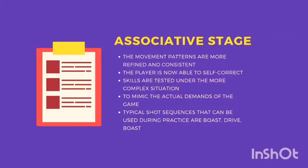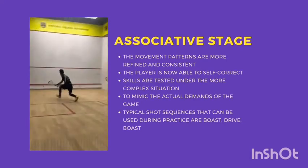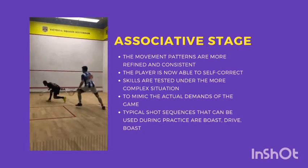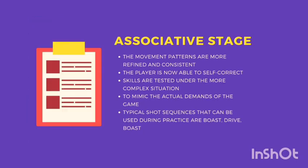Next is the associative stage. At this stage, the movement patterns are more refined and consistent. The player is now able to self-correct and has better motor control. They can also incorporate environmental information into the required movements. During coaching at this stage, the skills are tested under more complex situations to mimic the actual demands of the game. One of the typical shot sequences that can be used during practice is boast, drive, boast, or whenever the player has well-developed simple routines.